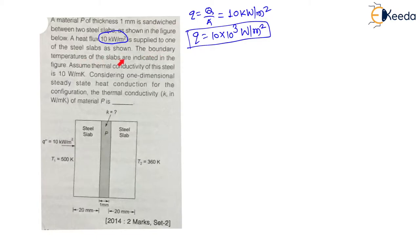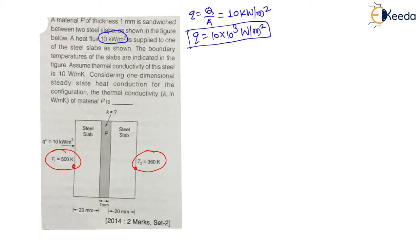The boundary temperatures of the slab are indicated in the figure. The left end temperature is 500°C and the right end temperature is 360°C. The thermal conductivity of steel is given as 10 watt per meter kelvin. Labeling the slabs: the left steel slab is slab 1, material P in between is slab 2, and the right steel slab is slab 3. Therefore k₁ = k₃ = 10 W/mK.